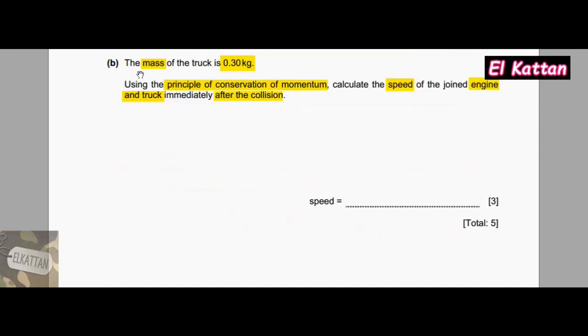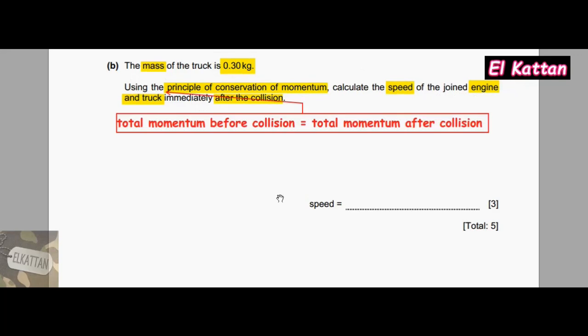In part (b), we highlight the mass of the truck is 0.30 kg. Using the principle of conservation of momentum, calculate the speed of the joined engine and truck immediately after the collision. To answer this question, we use the principle of conservation of momentum, which is total momentum before collision equals total momentum after collision.